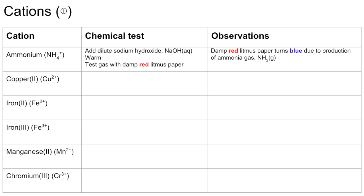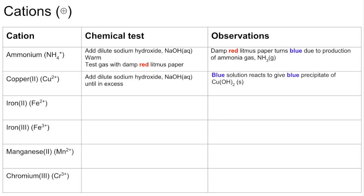For copper two plus ions, add dilute sodium hydroxide until in excess — a small amount first, then a lot more. You'd expect the blue solution of aqueous copper two plus ions to give a blue precipitate of copper two hydroxide, which does not dissolve in excess.